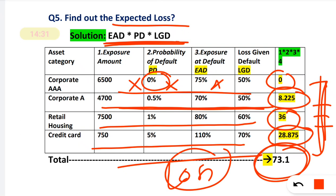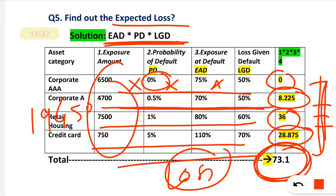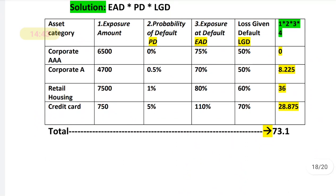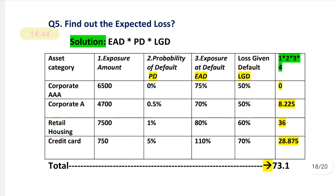Out of the total portfolio of 19,450 crores, the expected loss is 73.1 crores. This is the expected loss figure. In this way, you can solve this type of five-mark case study in your exam.